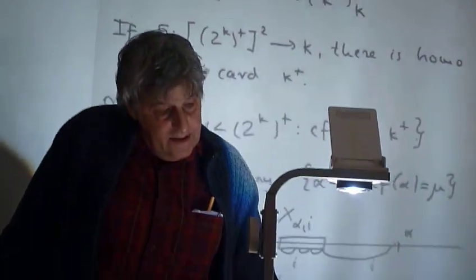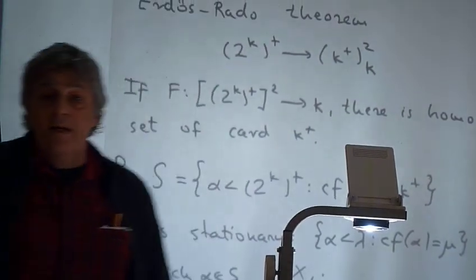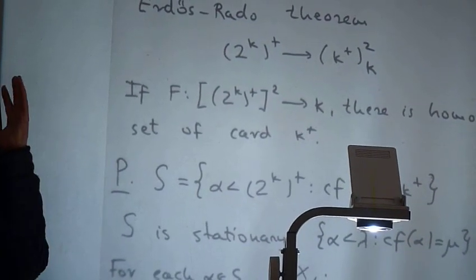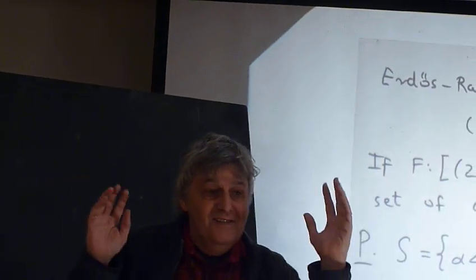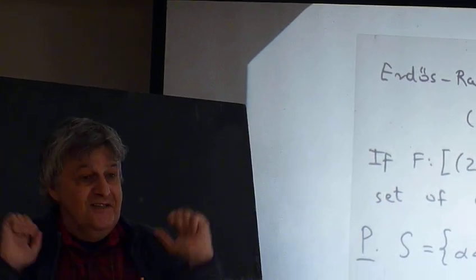In the proof, here is the proof. Now here it is important that the underlying set is not just of cardinal 2 to the kappa plus, but it is 2 to the kappa plus, the cardinal, the ordinal, the set of ordinals.